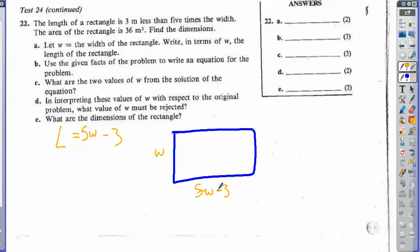Well, how do I find the area of a rectangle? Well, I multiply the base times height, so I'll have w times (5w minus 3), and we also know that the area of it is going to be equal to 36.